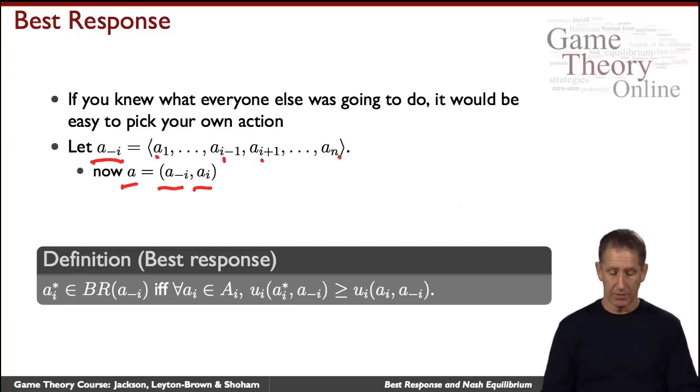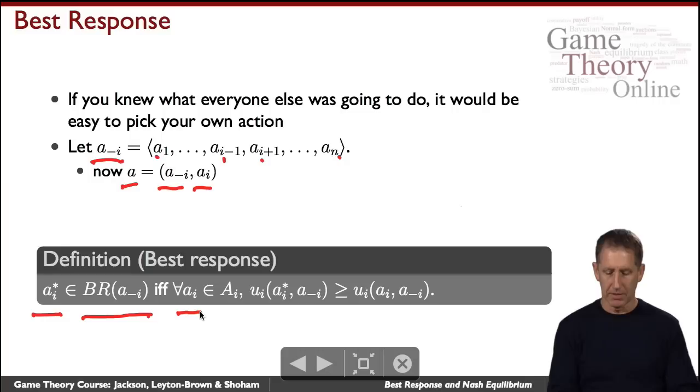With that notation, here's the definition. We will say that your best response, which we'll call a_i star, it may not be unique but it's got to be part of the set that we'll call BR, the best response assuming that all the other agents play A_{-i}, if it's the case that for anything you might be thinking of doing, a_i, for all a_i,